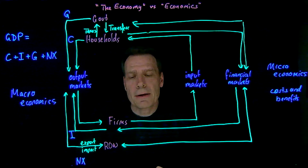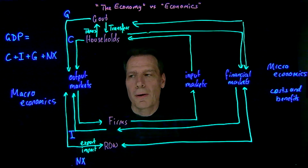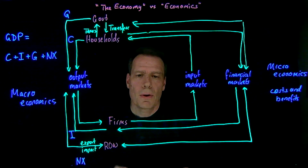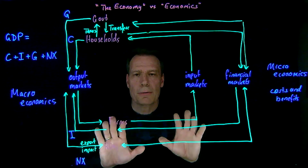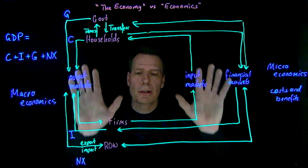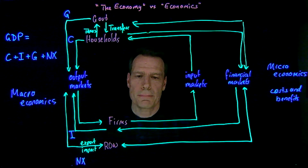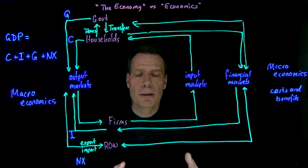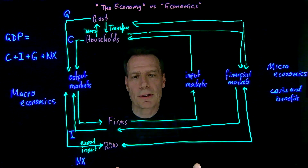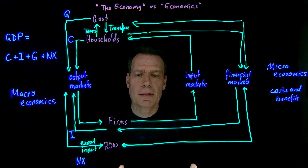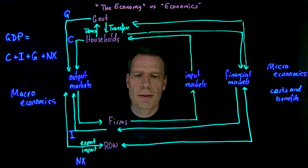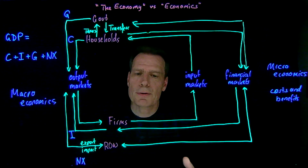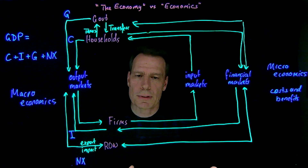Later in the course, we're going to begin as microeconomists — zooming into different parts of this picture and thinking about household decisions, firm decisions, and government decisions. We'll also think about decisions not explicitly included in this picture of the economy, where money isn't the primary reason people are making trade-offs. Then we'll turn to macroeconomics and zoom out to look at the whole system and the questions that require thinking about it as a whole rather than individual components.